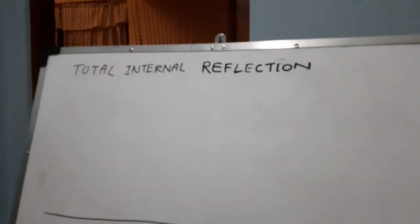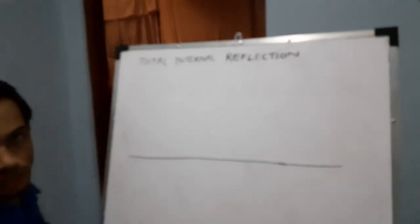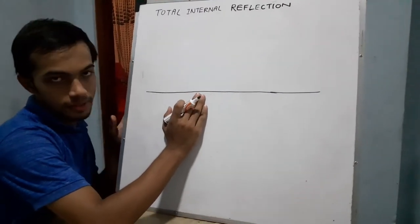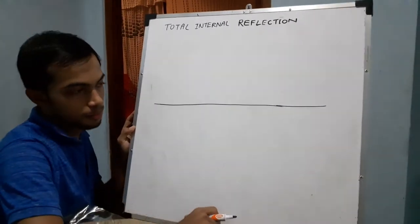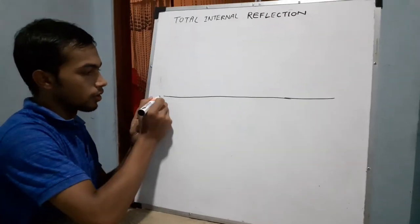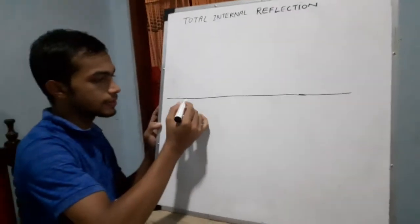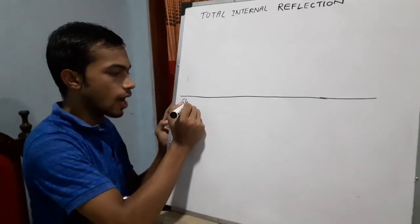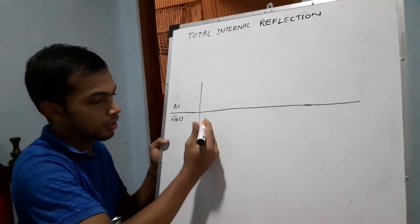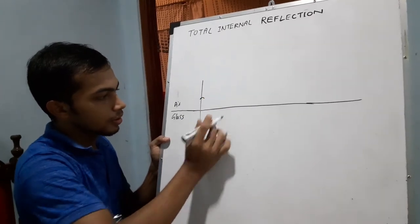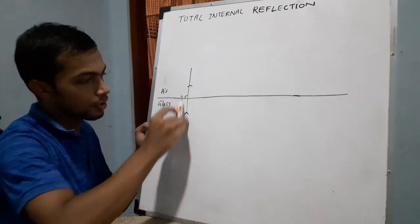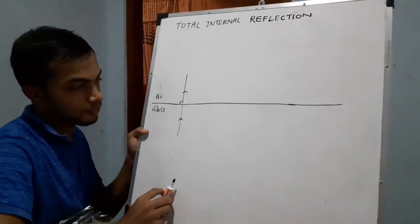Let's move on to total internal reflection. What does total internal reflection mean? The total light ray that moves to the interface will be reflected back to the incident ray medium. If you take glass and air here, if you send the light ray perpendicular to this medium, you will see the light ray won't be refracted. It will move through the normal without getting any refraction.